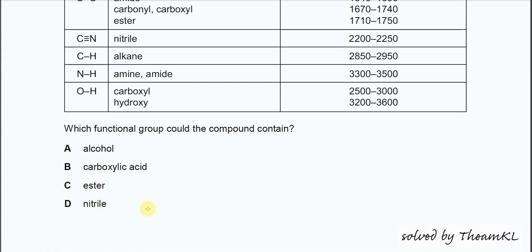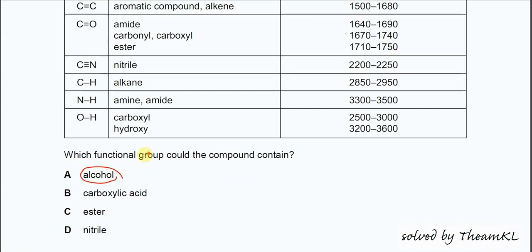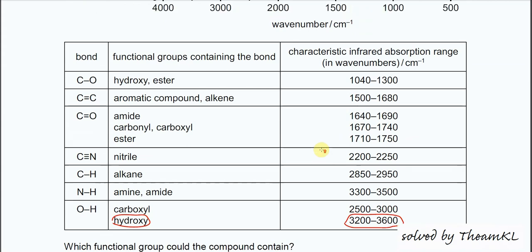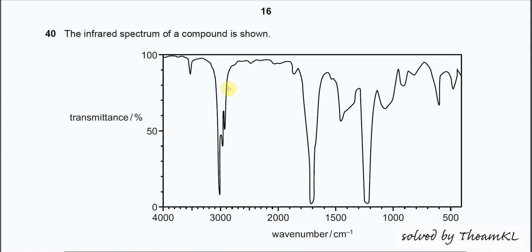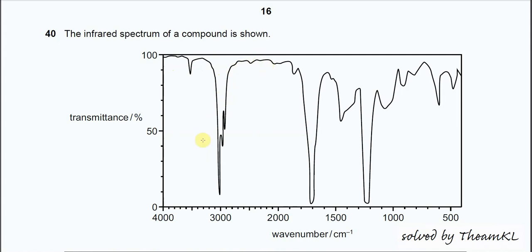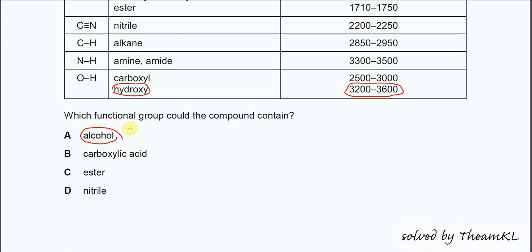We need to check each answer against this IR spectrum. Can the compound be alcohol? In order to be an alcohol, it must have a hydroxyl group, which shows a broad peak in the IR spectrum around 3200 to 3600. In this IR spectrum, there is no broad peak around that range, so it cannot be alcohol. A is not the answer.